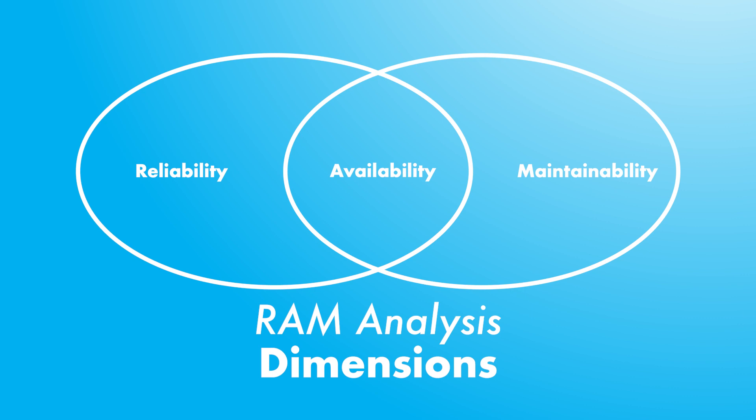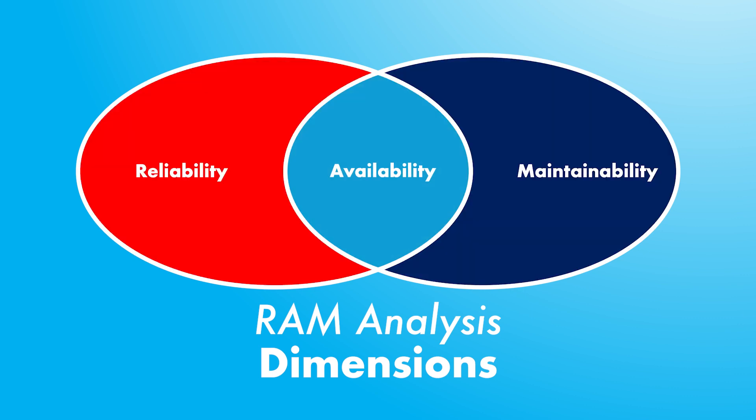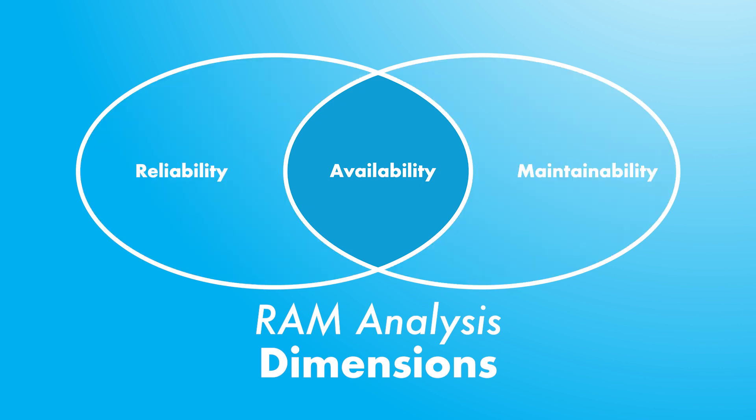We have here a graphical representation of RAM analysis, showing the three dimensions: reliability, availability, and maintainability. Availability is shown between reliability and maintainability because it accounts for both dimensions — it is like a summary of the reliability and maintainability dimensions.